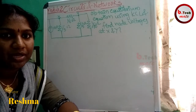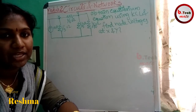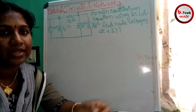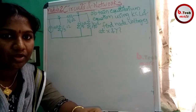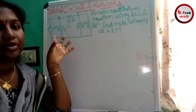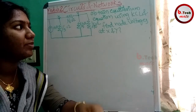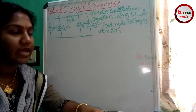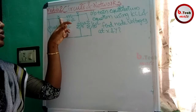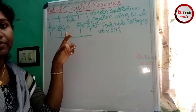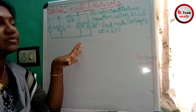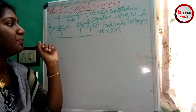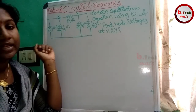The next problem is the KCL equation. The problem is to obtain the equilibrium equation using KCL and find the node voltages at x and y. If we take two node voltages at x and y, we can obtain the two node voltages at x and y. Now, how to do this network?